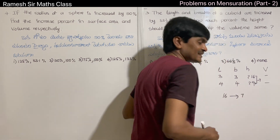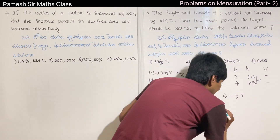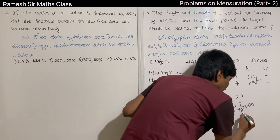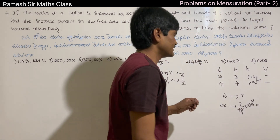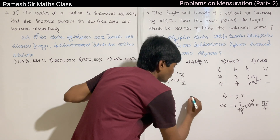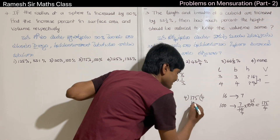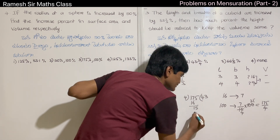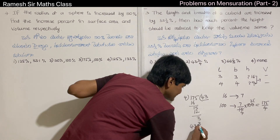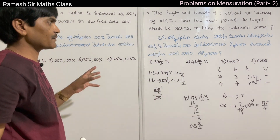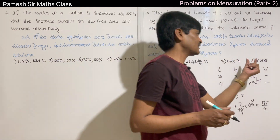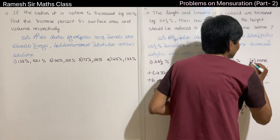We have 16 units as the base. The decrease is 7 units. Percentage decrease = (7/16) × 100 = 700/16 = 175/4 = 43.75, which is 43 and 3/4 percent. The correct answer is the 4th option.